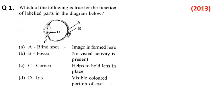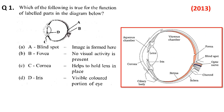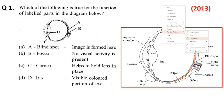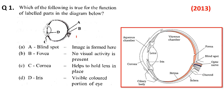In 2013: which of the following is true for the function of labelled parts in the diagram below? So here we have: Part 1 is fovea centralis which says image formation, B is blind spot, C is ciliary body, and D is iris, using those functions as well.